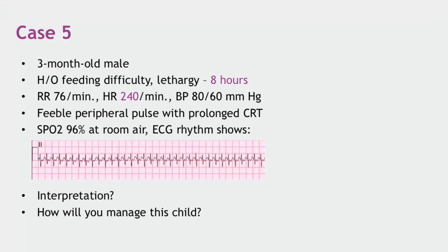Responses from participants indicate: absent P waves, narrow complex QRS, and no RR variation — it is a fixed RR interval. These are the key differences between PSVT and sinus tachycardia. Heart rate more than 220 per minute is another point in favor of SVT.